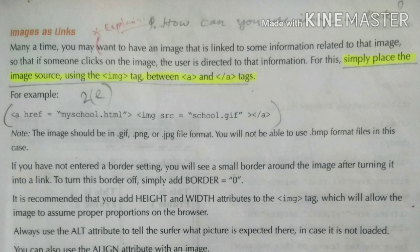If you don't want the border, you need to write border equal to zero. It is recommended that you add height and width attributes to the image tag, which will allow the image to assume proper proportion on the web browser. If the image is large size, it will come according to the height and width given. Otherwise the image size will come as it was and it may cover the whole browser window and will not look proper. That's why you have to use the height and width attribute.